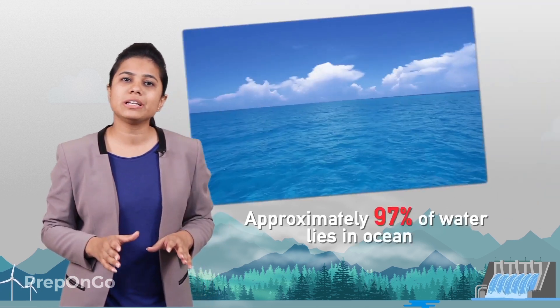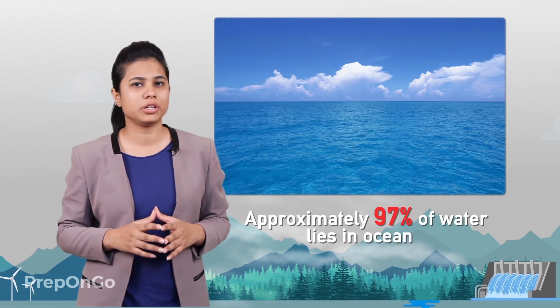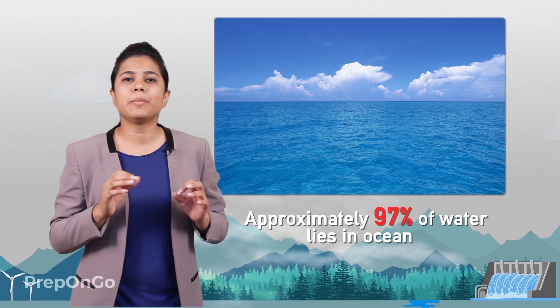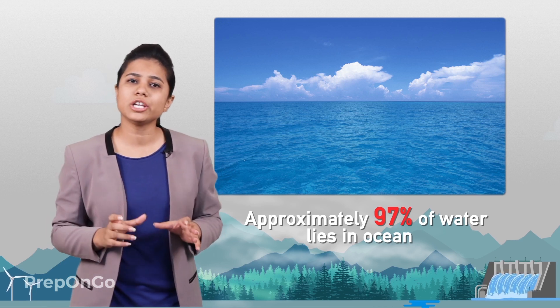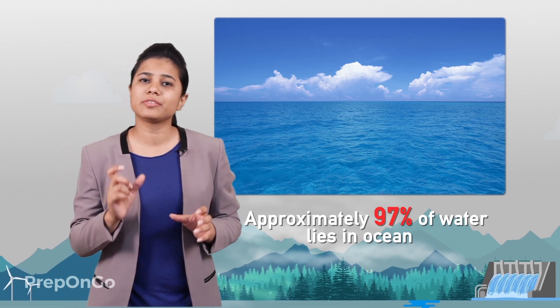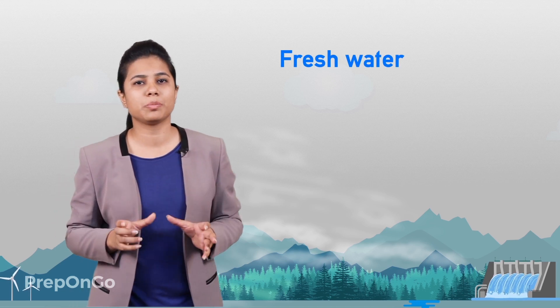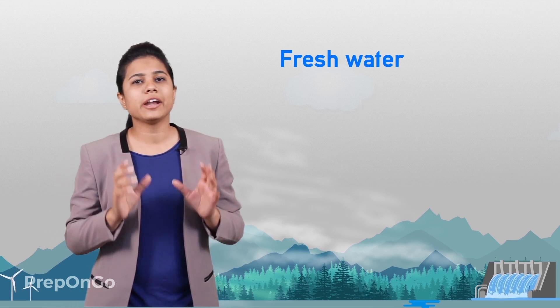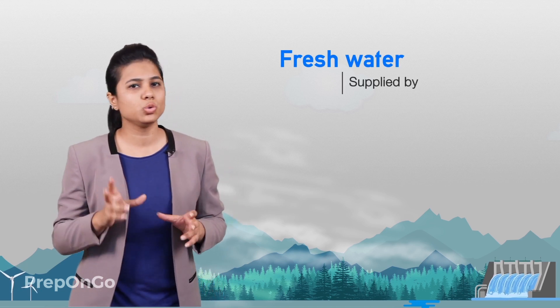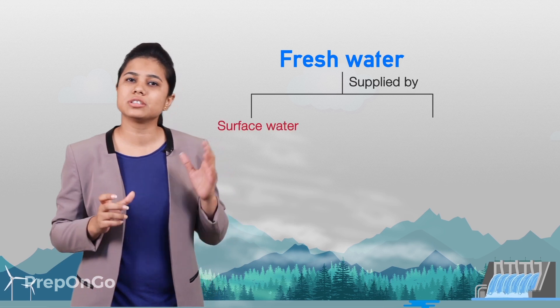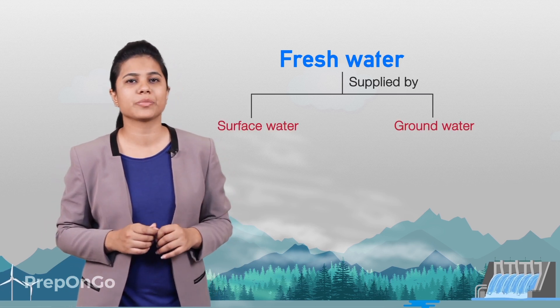Approximately 97% of the water lies in the ocean but it is only usable after extensive treatment. Fresh water is in a small proportion and is supplied by two major sources: surface water and groundwater.